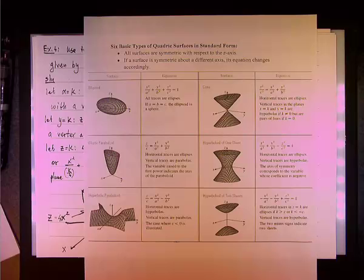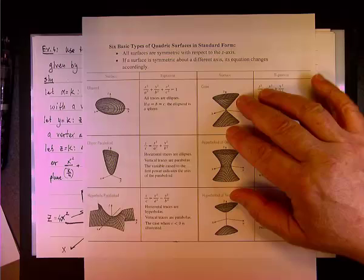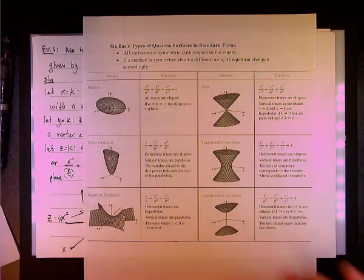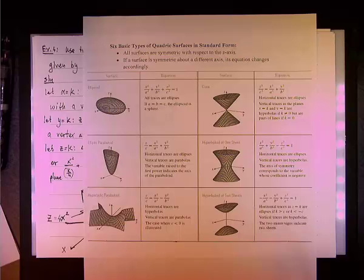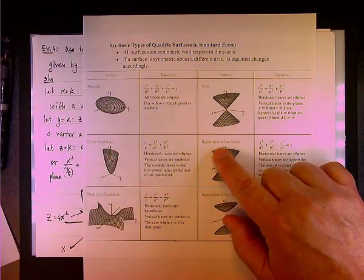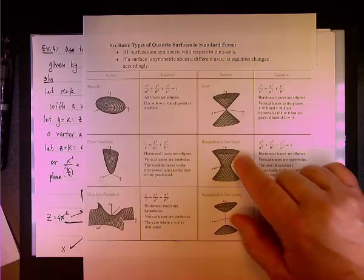When you look at the next one, you see the cone. The traces are, the horizontal traces are ellipse. Vertical traces are line z equals k and y equals k. Actually, the vertical lines are hyperbolas. But, when k is not equal zero, then we have pair of lines. So, we end up having a cone here. It's a double pane cone. That's what we call it. Double pane. P-A-N-E. Cone.